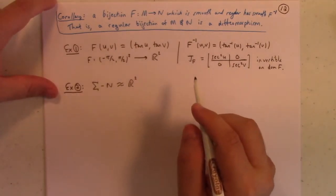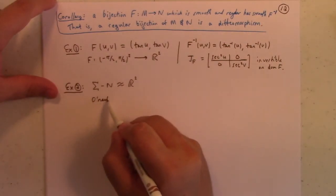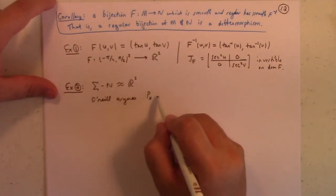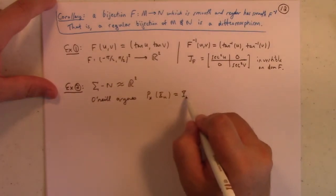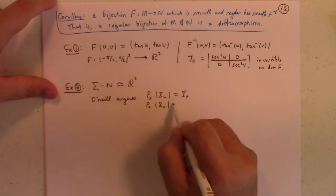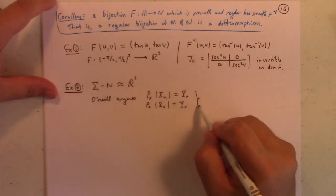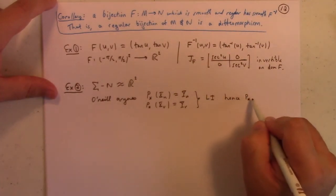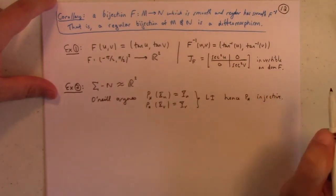Now, O'Neill takes a different approach. He just says, he argues, what's O'Neill argue here, he argues directly that the push forward of xu is equal to yu, and the push forward of xv is yv, and he argues that these are linearly independent, hence, the push forward is injective. So, I'll leave those details to you guys.